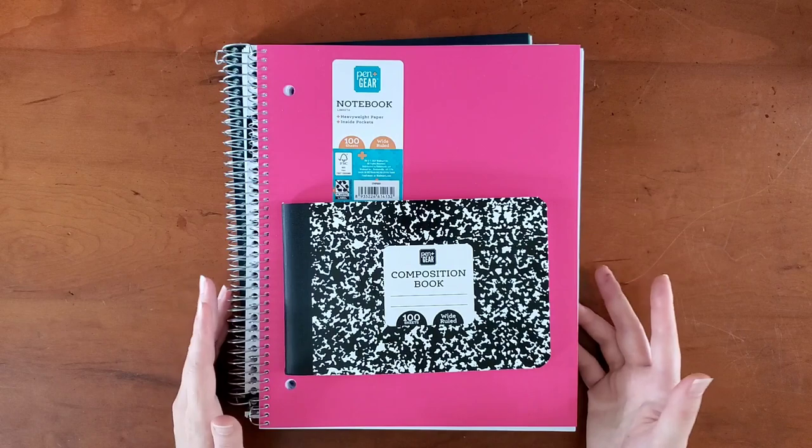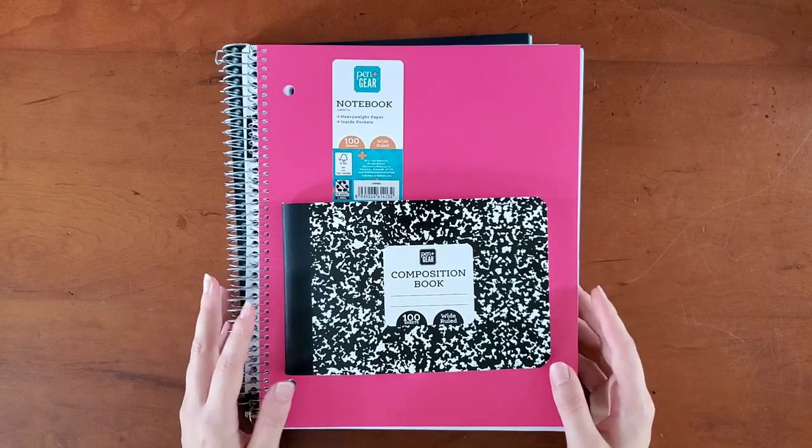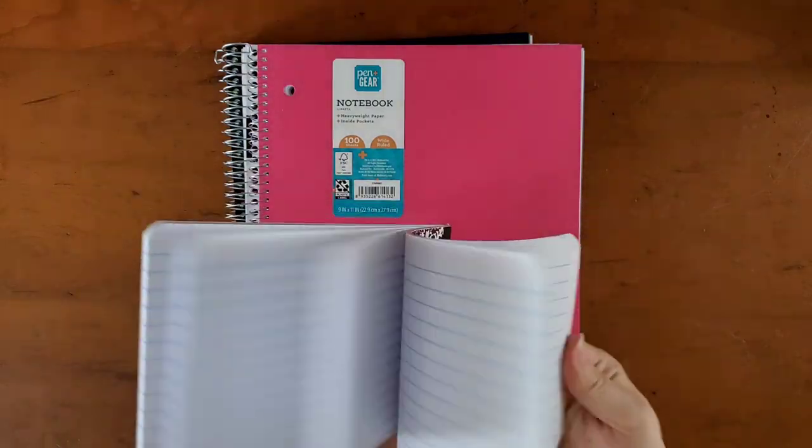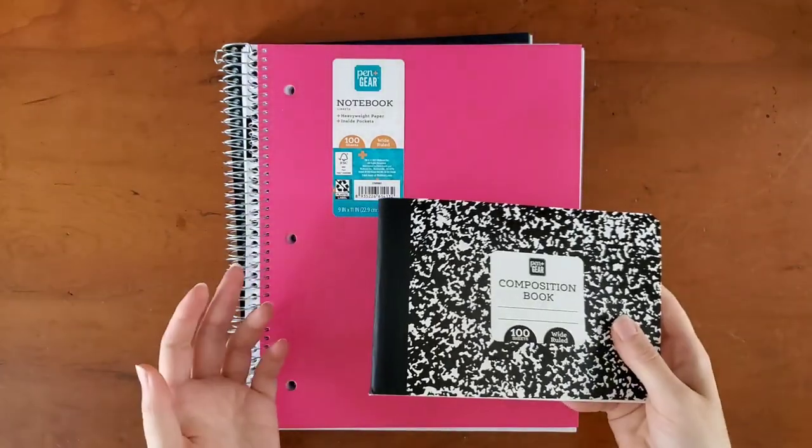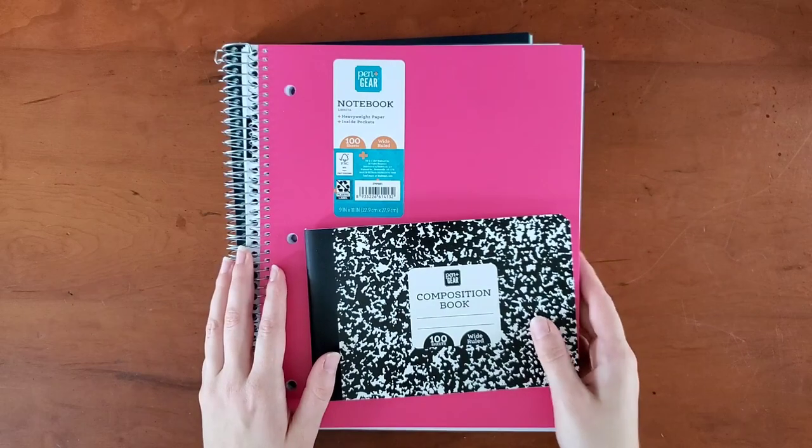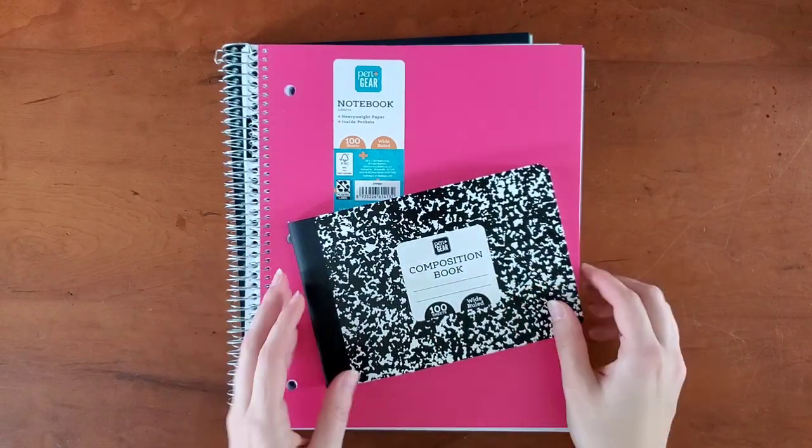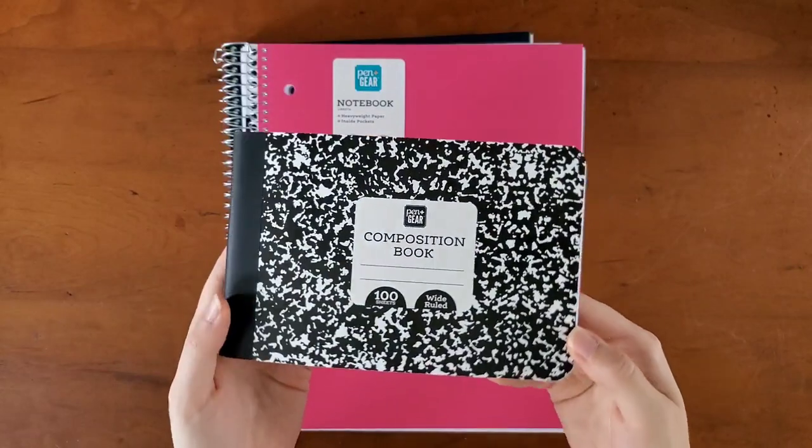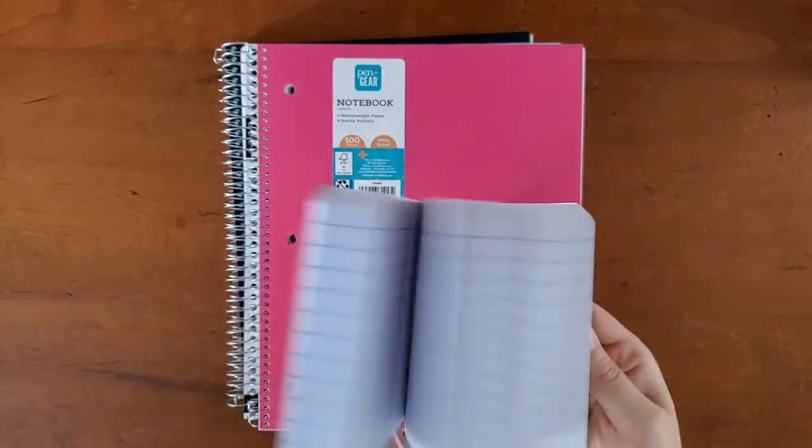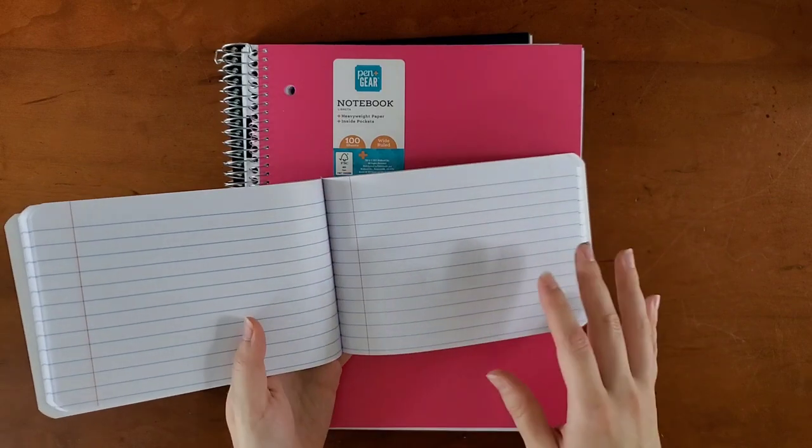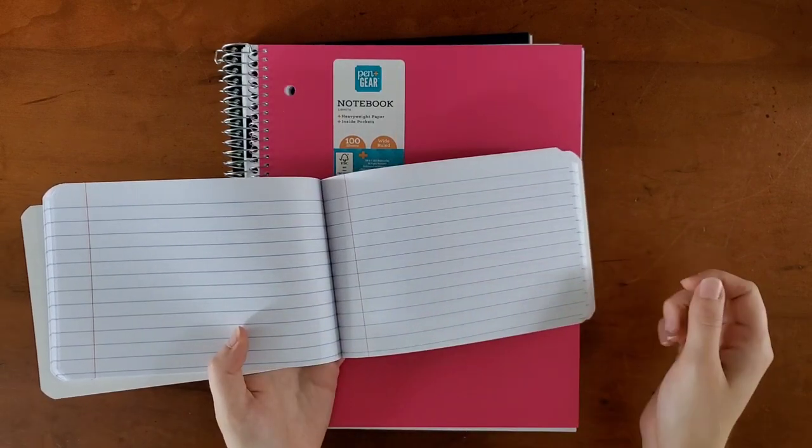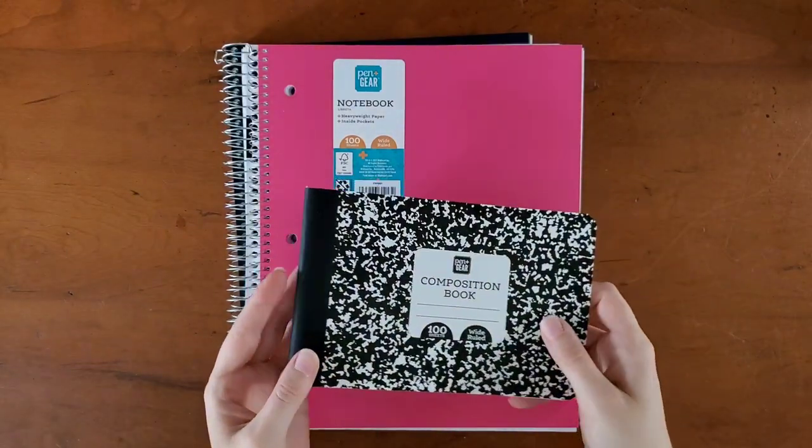This was what was left at my local store. School is back mostly in the US, so a lot of the supplies were gone, but these were on clearance, so that was even better for me. I picked up this half composition book, which I think is actually pretty cool. I would love to see this in a college ruled. This one is wide ruled, but I like smaller notebooks being oriented this way. I think they're a little bit easier to write in, a little bit more on the handy side.